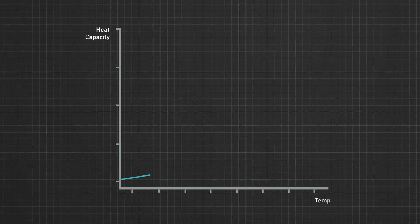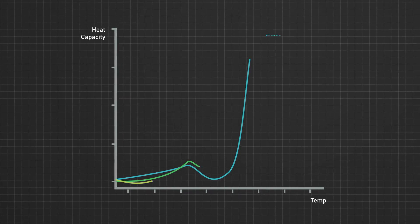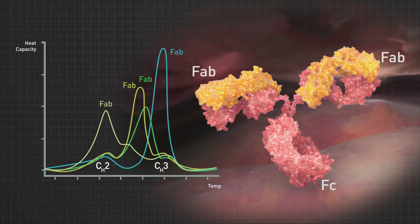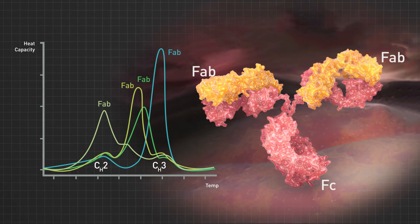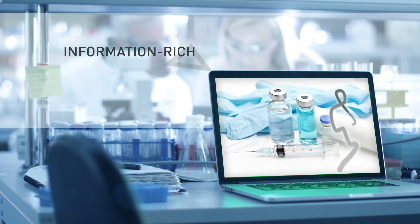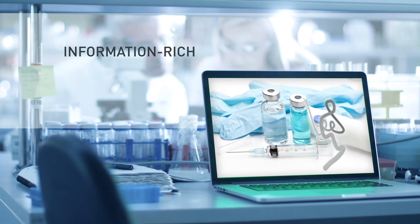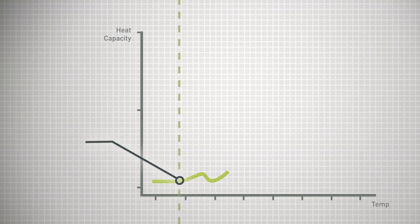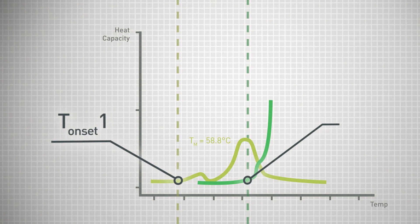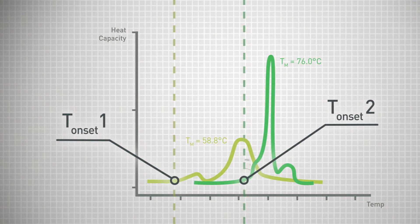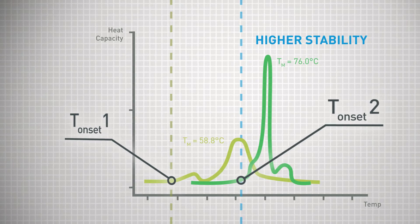DSC is used for stability comparability studies of large multi-domain proteins, like antibodies with multiple TMs. Beyond the TM, DSC is information rich, especially when compared to other techniques such as fluorescence. This includes T onset — the temperature where the heat capacity begins to change. The higher the T onset, the higher the stability.